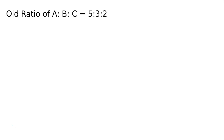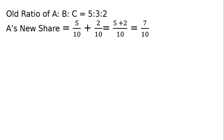C retire ho gaya, uska pura share A nilay liya. Old ratio of A:B:C is equal to 5:3:2. A ka new share ho gaya: 5/10 (his own) plus C ka pura share 2/10. Uska ho gaya numerator mein 5 plus 2 by 10, that is equal to 7/10. Ye ho gaya A ka new share.